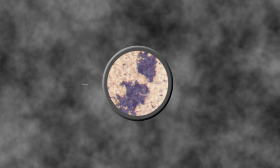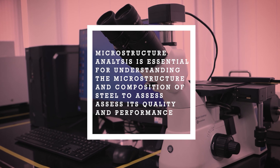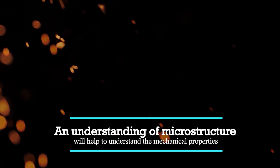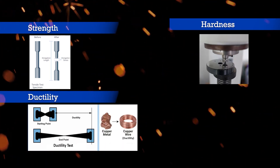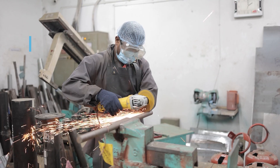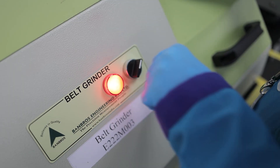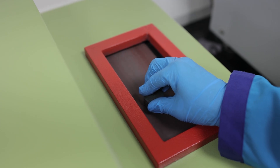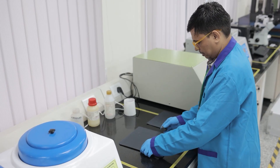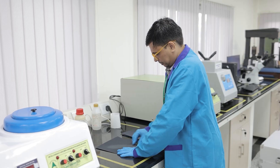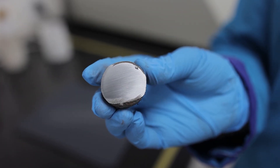Microstructure analysis is essential for understanding the composition of grey cast iron to assess its quality and performance. Understanding microstructure helps evaluate mechanical properties such as strength, hardness, ductility, the phases in the product and grain sizes where applicable. Sample preparation for metallurgical analysis includes the following steps. Grinding: the sample is ground using progressively finer abrasive papers on a belt grinder, followed by manual rubbing on abrasive paper of various grit sizes. This step removes surface deformations from the cutting process and ensures a flat, smooth surface for further preparation.